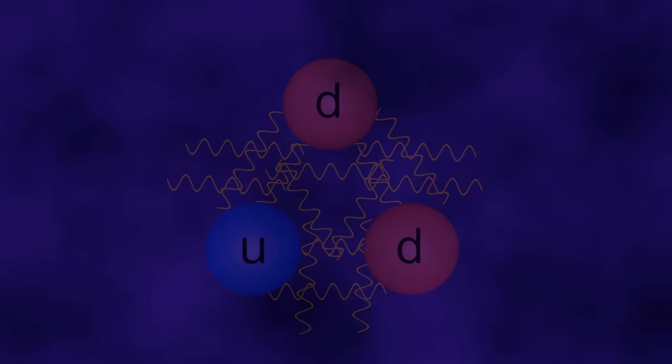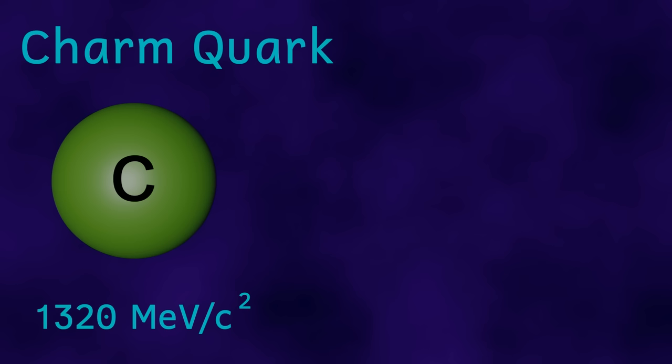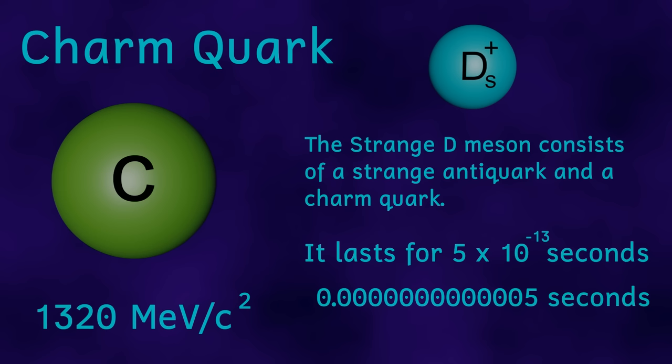Next on our list, we have the charm quark. This weighs in at 1320 mega electron volts per c squared. This is over 2000 times heavier than an electron. These particles are found in baryons, which are heavier particles. Most of these particles, however, only exist for tiny fractions of a second.